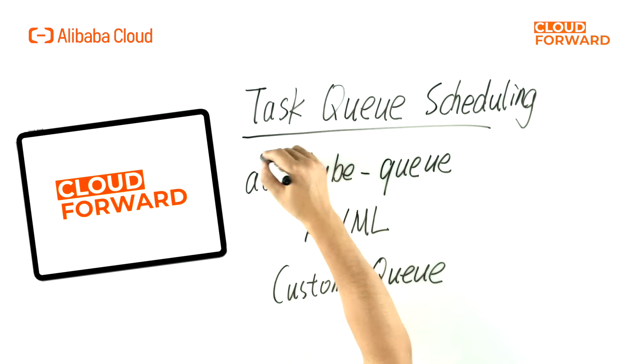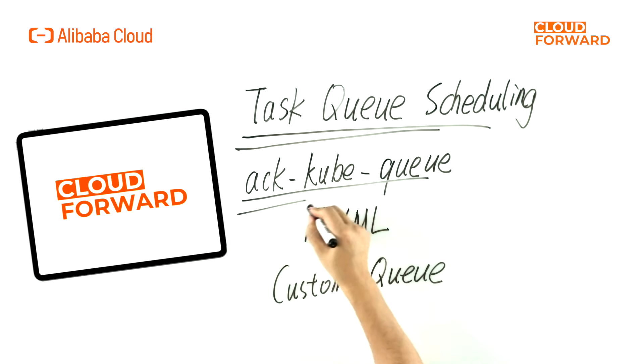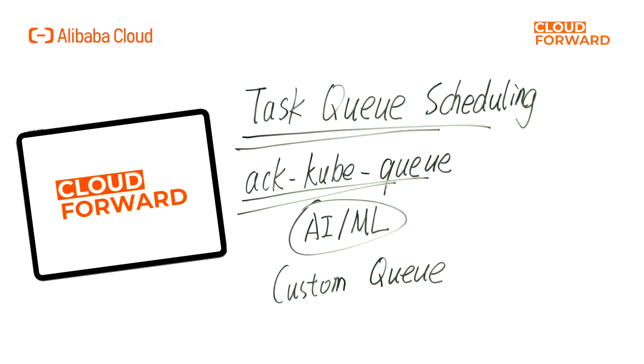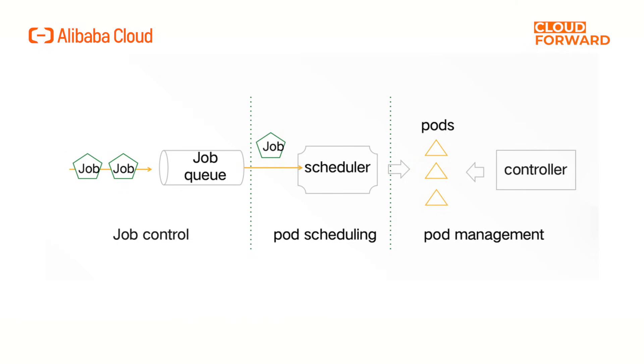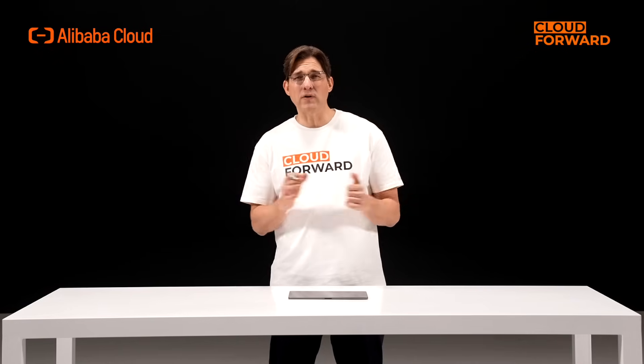ACK Cloud Native AI Suite also offers a Task Queue scheduling feature. The ACK Kuba Queue manages AI, ML, and batch processing workloads in Kubernetes, allowing system administrators to use custom queue management for improved queue flexibility. Combined with the quota system, ACK Kuba Queue optimizes workload and resource quota management to maximize cluster resource utilization. Users can define custom queue structures or create multiple queues based on tenants. Each queue supports customizable queuing strategies, and strategies between multiple queues can also be defined, such as fair queuing. Kuba Queue controls the dequeuing strategy for queue units, and only when a queue unit is dequeued does the corresponding job enter the cluster scheduling resources.